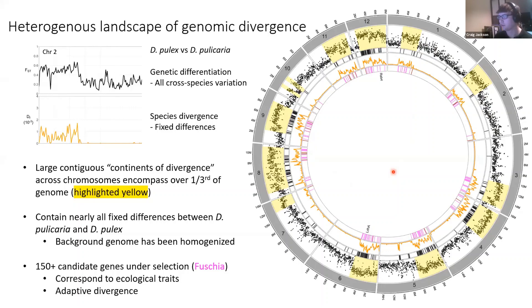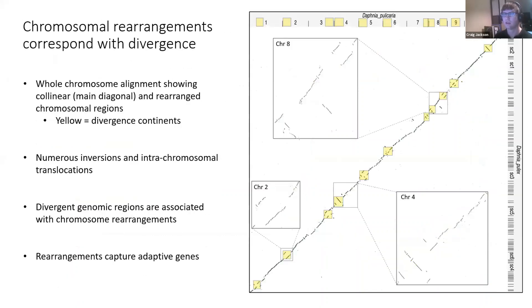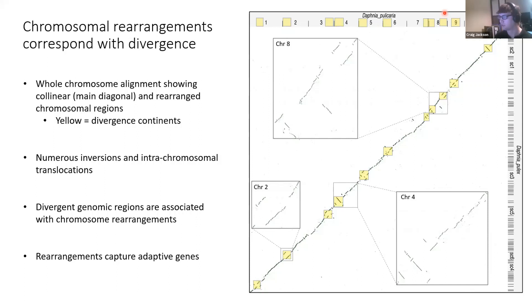We also identified over 150 candidate genes under selection throughout these divergent regions, indicated in fuchsia markings. Many of these genes' functions correspond to the different ecological traits between the species, indicating adaptive divergence within some of these regions. Using chromosome-scale assemblies, we were able to view complete contiguous genome alignments between the two species. The Pulicaria 12 chromosomes on the x-axis and the Daphnia pulex genome show the main diagonal as collinear regions, with deviations indicating chromosome rearrangements. We found numerous inversions and translocations, and almost all genomic divergent regions are associated with chromosome rearrangements at those loci.